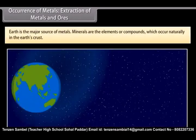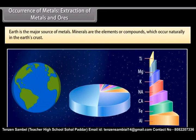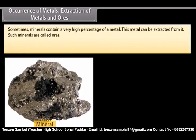Occurrence of metals. Extraction of metals and ores. Earth is the major source of metals. However, seawater also contains some soluble salts. Minerals are the elements or compounds which occur naturally in the earth's crust. Sometimes minerals contain a very high percentage of a metal. This metal can be extracted from it. Such minerals are called ores.